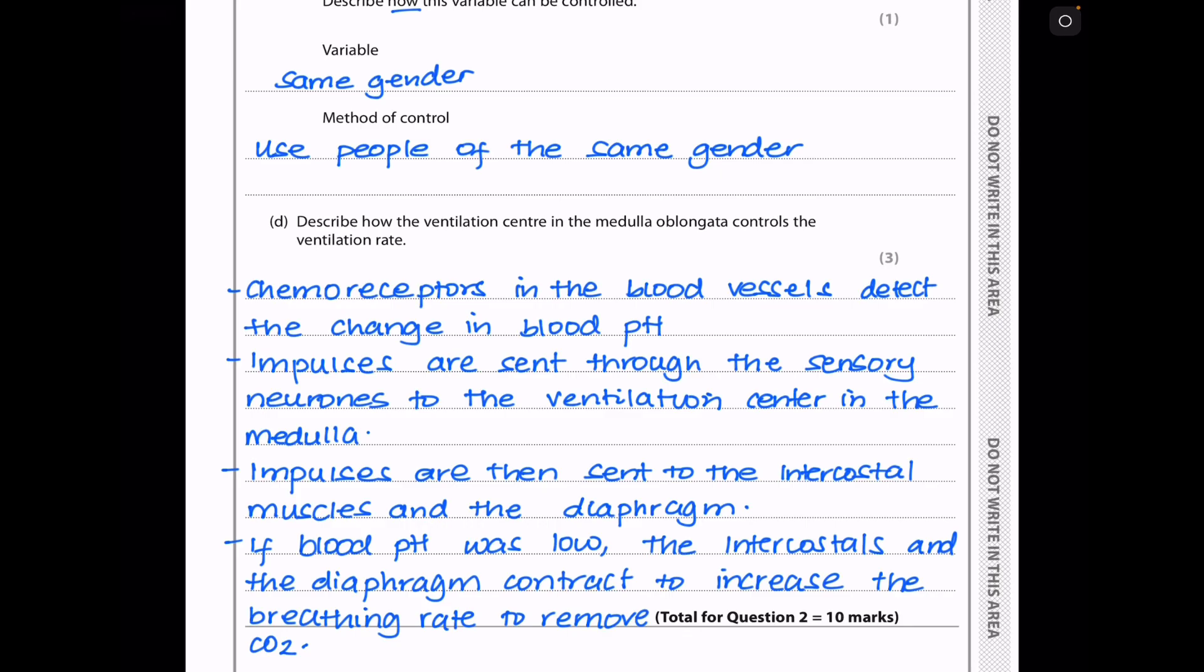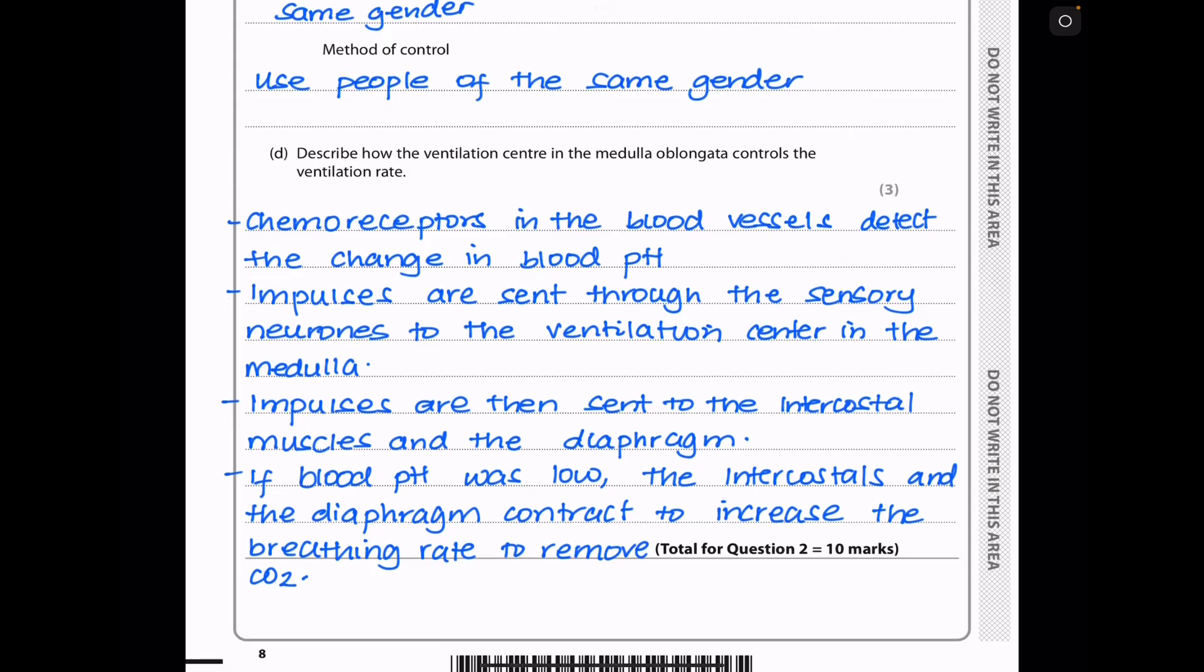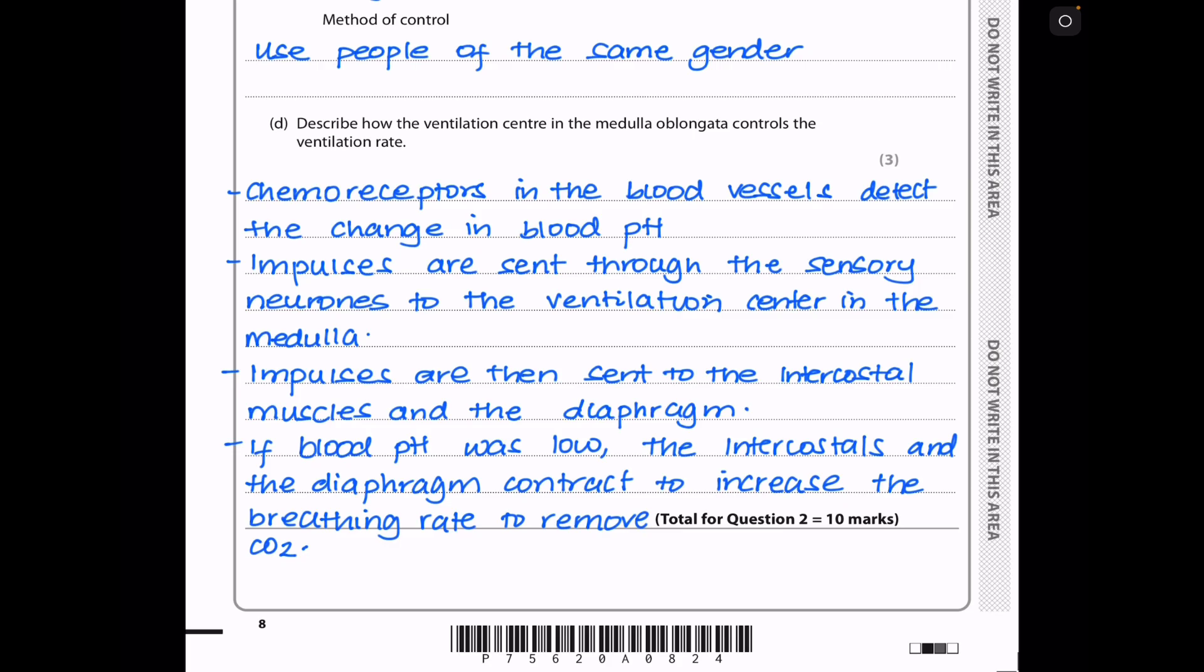Then in part D, they say describe how the ventilation center in the medulla oblongata controls the ventilation rate. Controlling the ventilation rate is to do with how the intercostals as well as the diaphragm work. So here I said chemoreceptors in the blood vessels are going to detect the change in the blood pH. And when that happens, they send impulses through the sensory neuron to the ventilation center in the medulla. And from there, impulses are sent to the intercostals as well as the diaphragm. And if blood pH was low, the intercostals and the diaphragm will contract to increase the breathing rate in order to remove the carbon dioxide that is building up. So this brings us to the end of question 2.